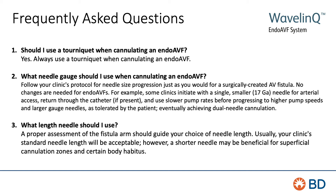For example, some clinics initiate with a single smaller 17-gauge needle for arterial access, return through the catheter if present, and use a slower pump rate before progressing to higher pump speeds and larger gauge needles as tolerated by the patient, eventually achieving dual needle cannulation.